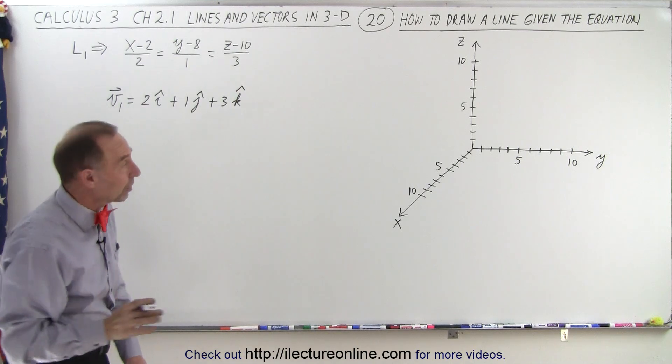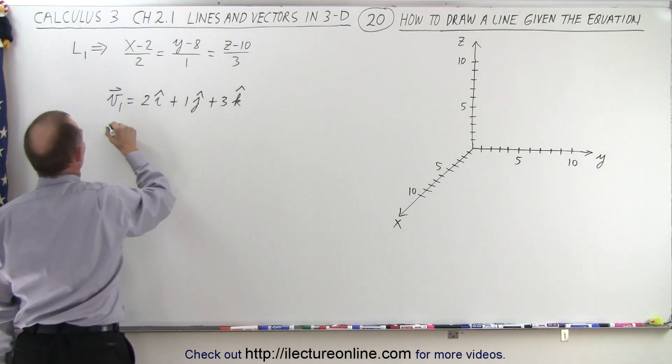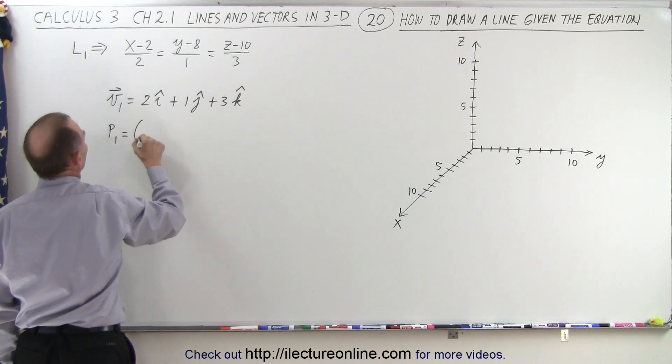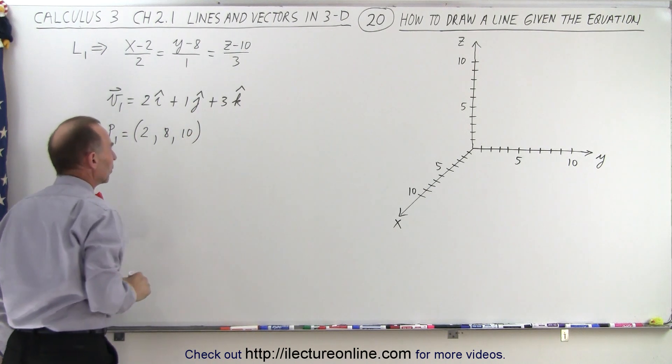We also need to find a point on the line and there's one point given by the numbers over here so we can say that point 1 is equal to 2 for the x-coordinate, 8 for the y-coordinate and 10 for the z-coordinate.